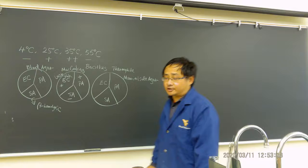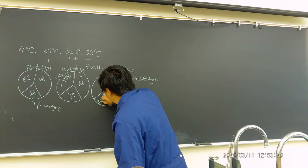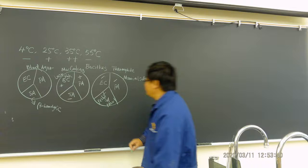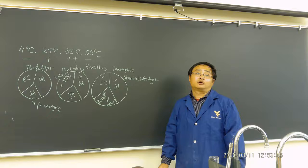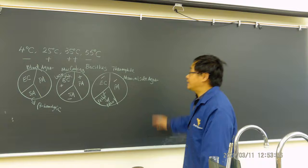On Mannitol salt agar, there should be no growth for E. coli and no growth for Pseudomonas aeruginosa. Staphylococcus aureus should grow and show a yellow color — yellow means mannitol fermentation positive. This used to be a fill-in-the-table exam question, but this year it will be multiple choice, a little easier.